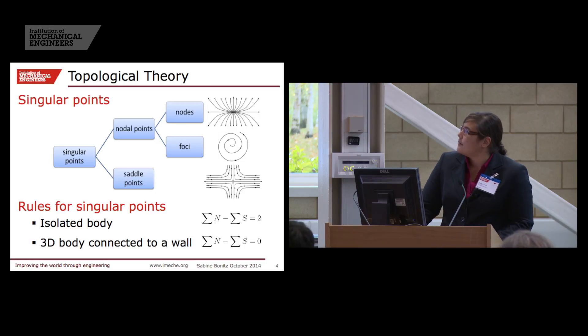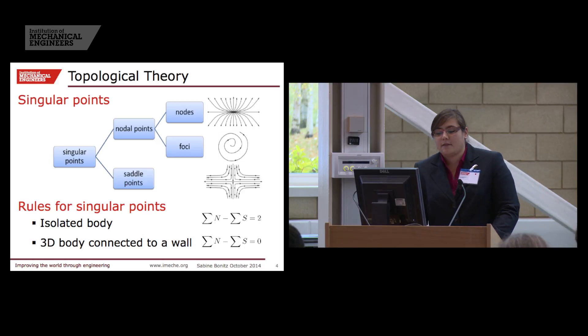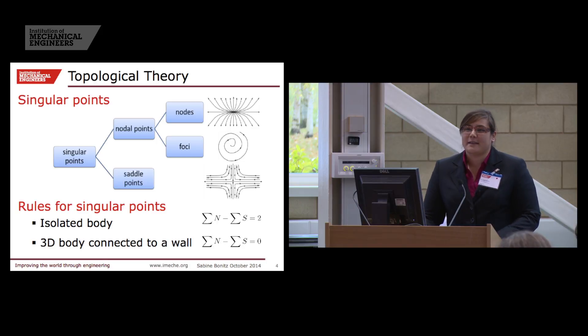The mathematicians also provide us rules for these continuous vector fields which can be applied. The two most important ones are those for isolated bodies, for example just a cylinder or a wing section in a wind tunnel, where we should find in the surface pattern the same amount of nodes and saddles. And there's also a rule for a three-dimensional body connected to a wall, that means for example a wing section mounted on the ground, where we should find the same amount of saddles and nodes. And for isolated body, two more nodes than saddles.